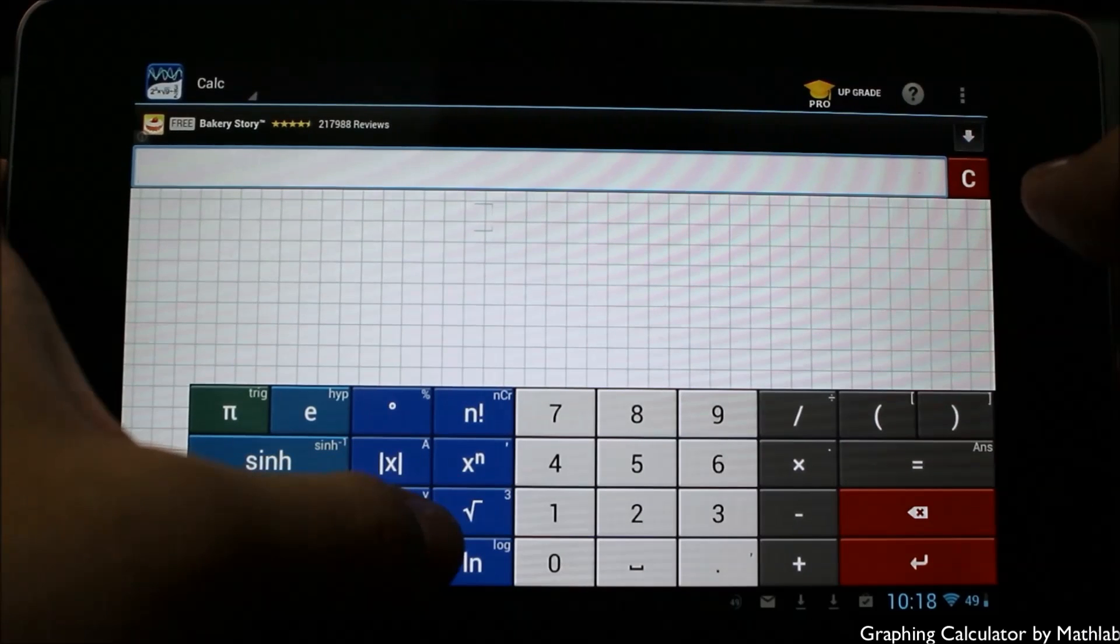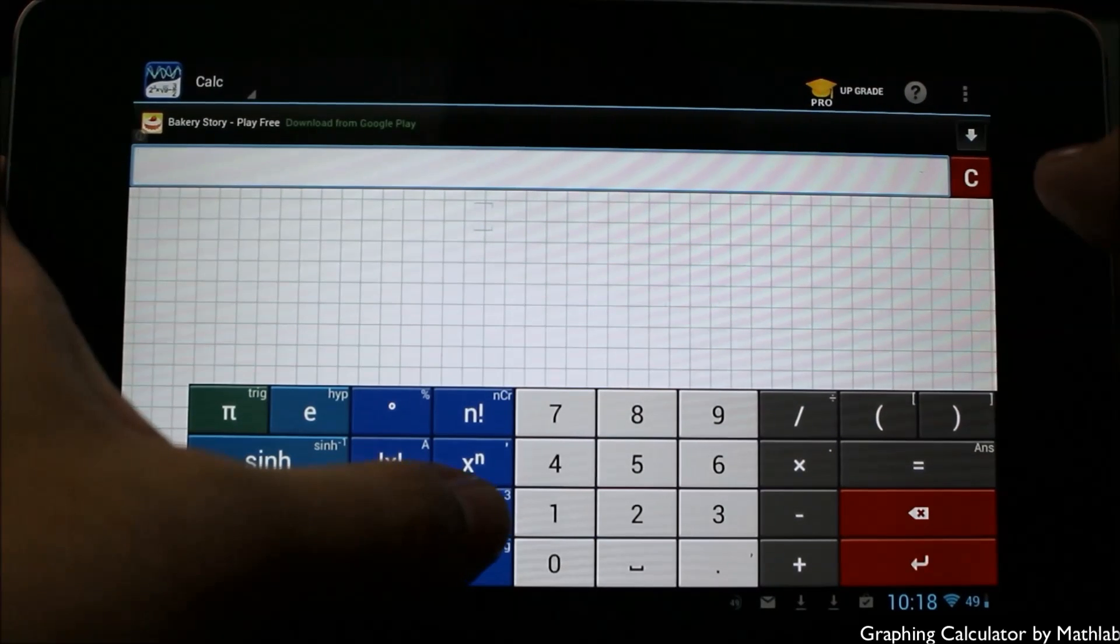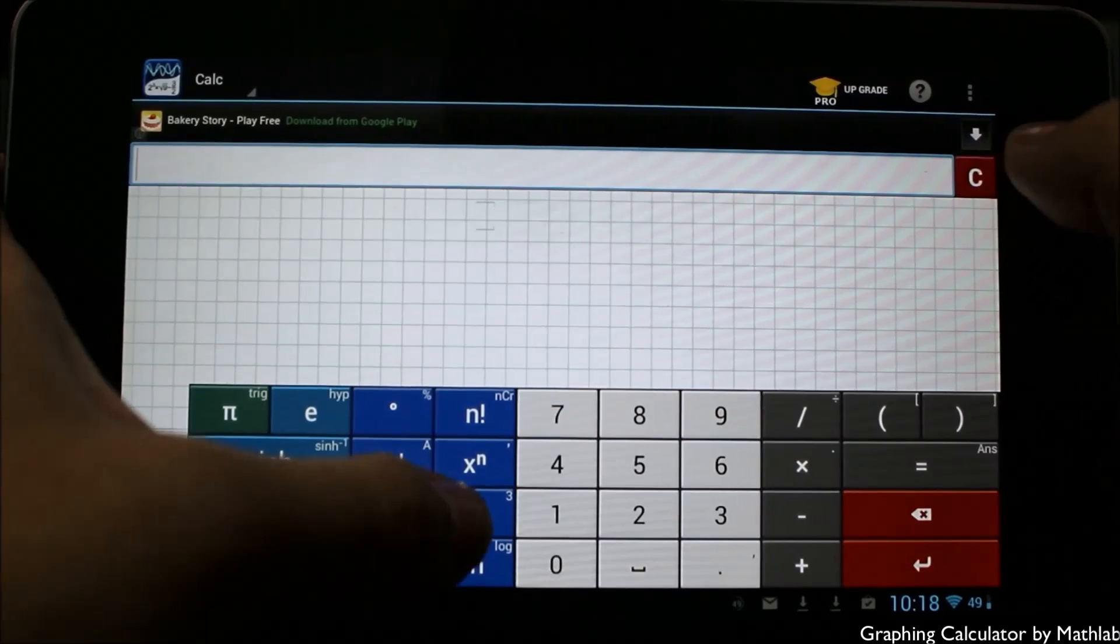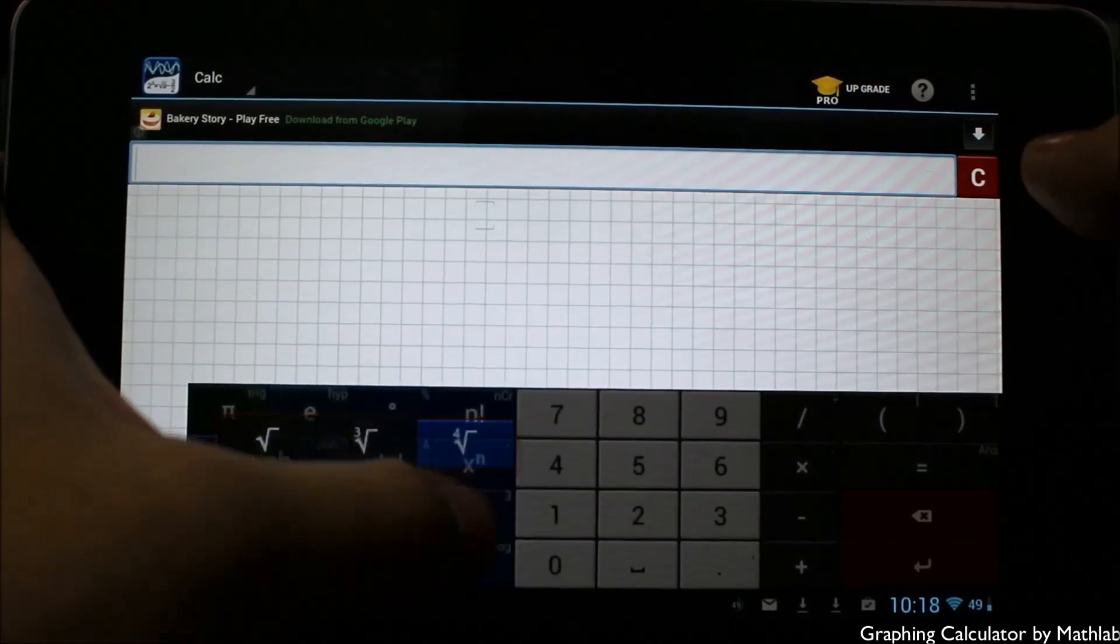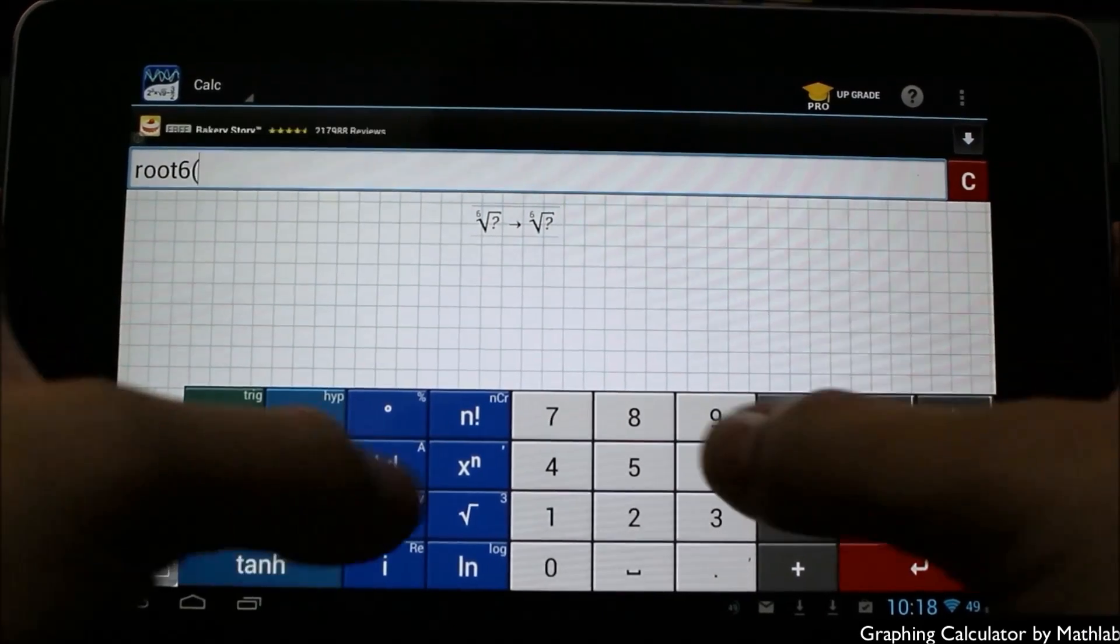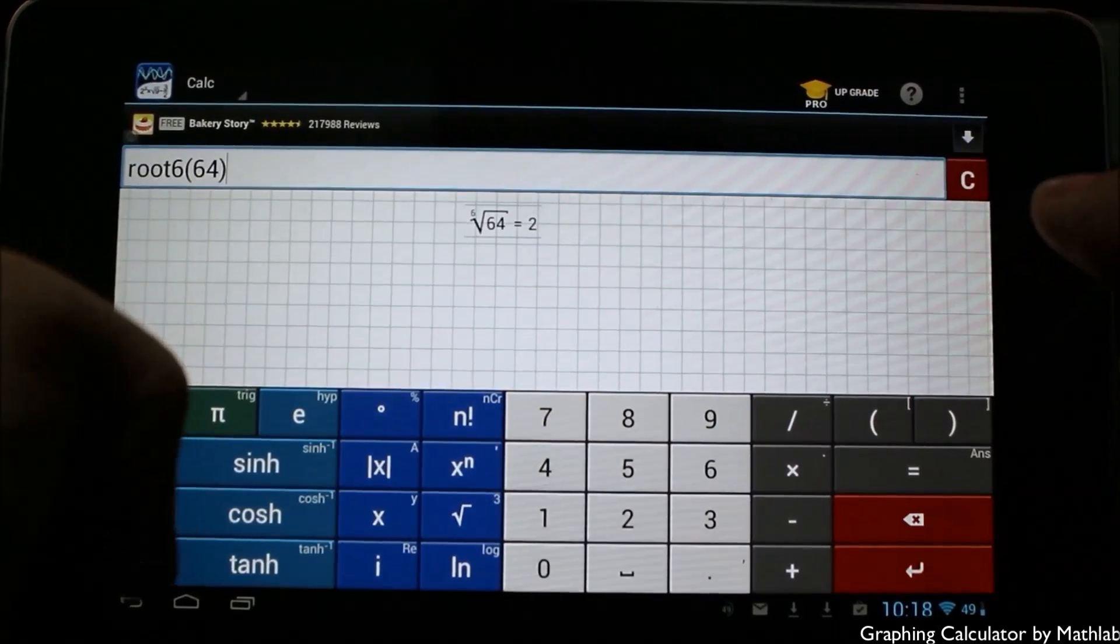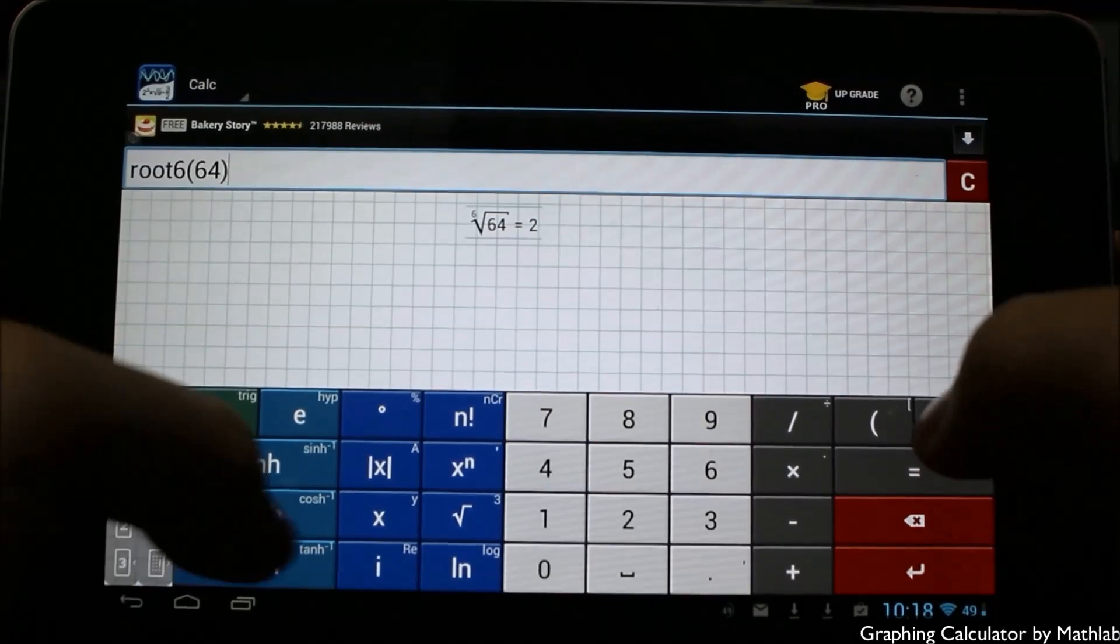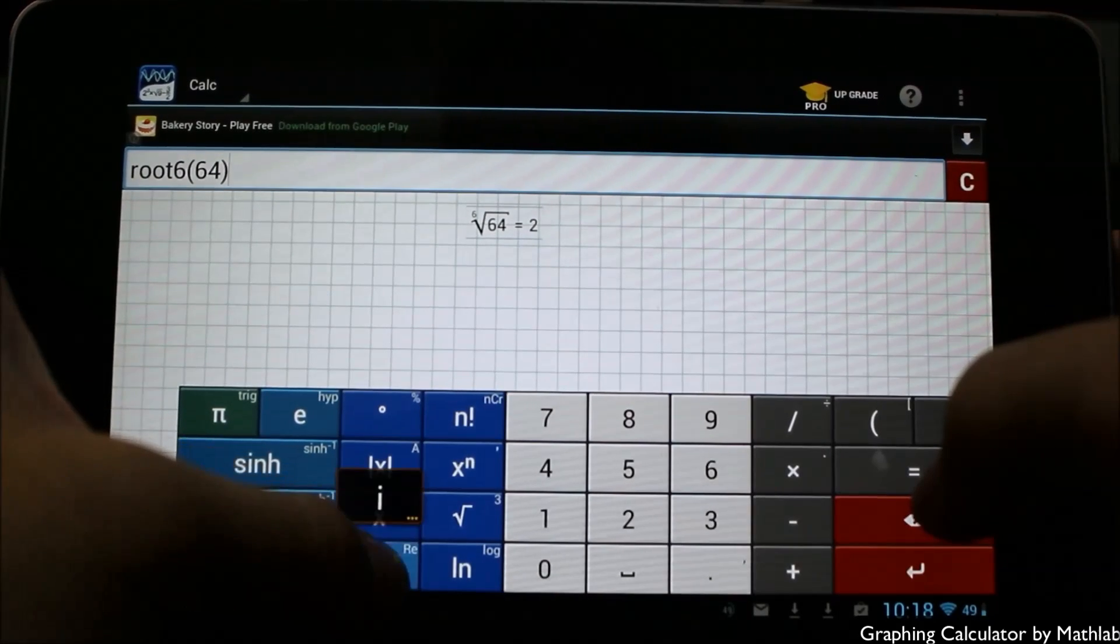Going down here, we'll go into, for example, the cubes if you want to type in any other cubes or roots. If I tap this, you just get the square root, but if I hold it, you get other options and I can easily change the numbers. So if I was to say root of six in this case and give it a number like 64, you can see that will automatically equal two.